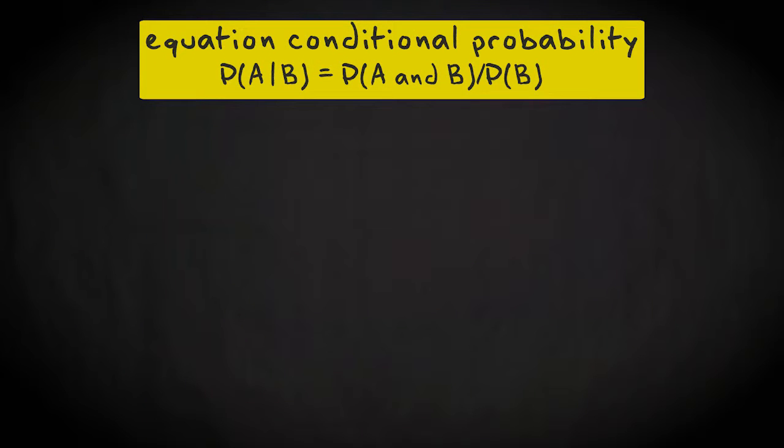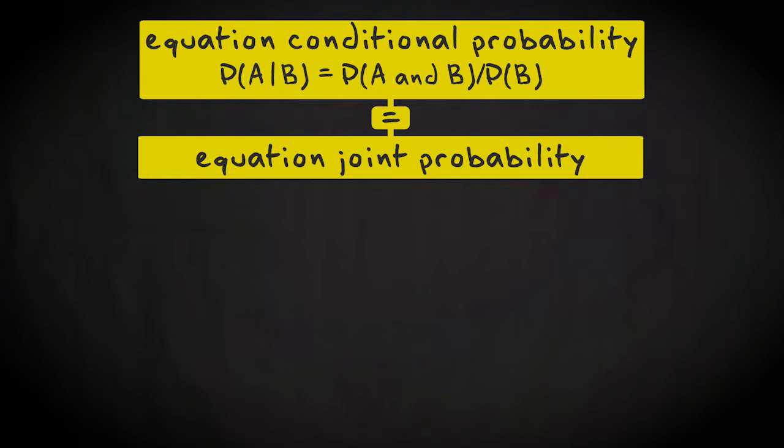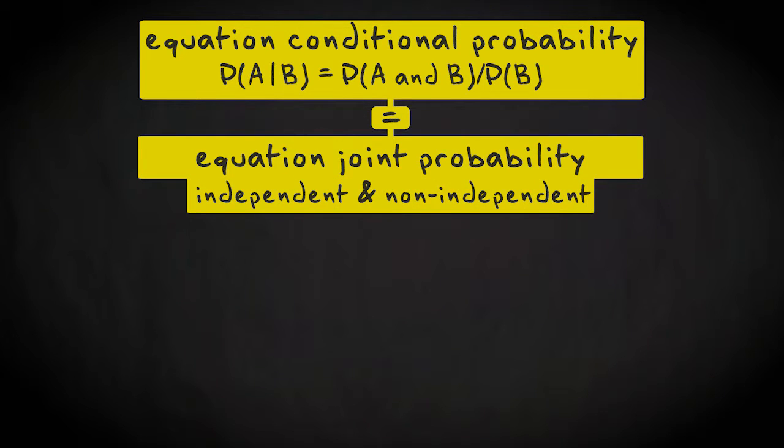But the equation for conditional probability, simple as it is, has a little bit more to offer. It is at the same time the general equation for calculating joint probability for both independent and non-independent events.